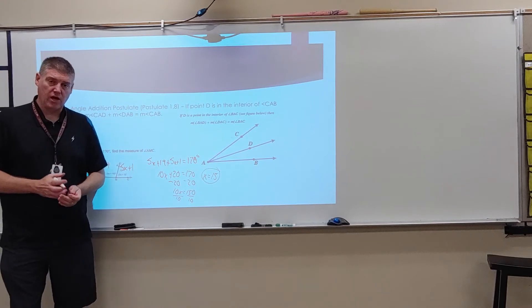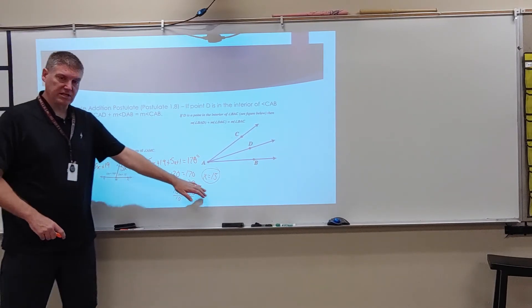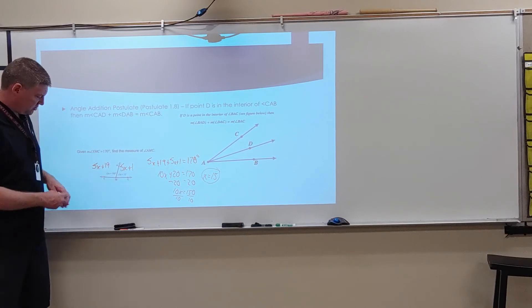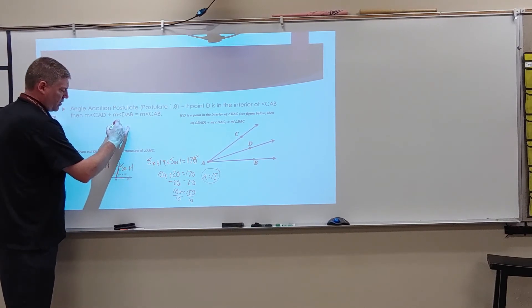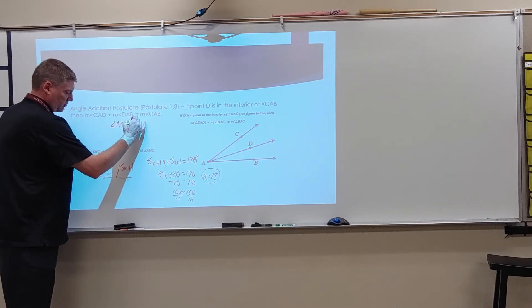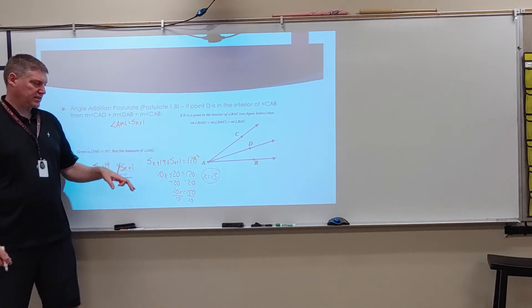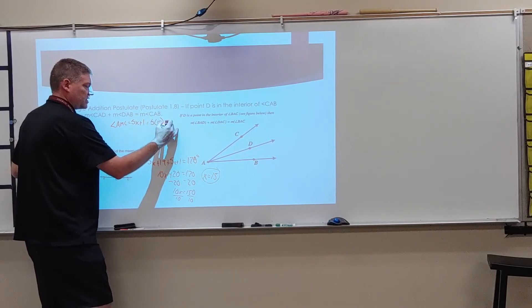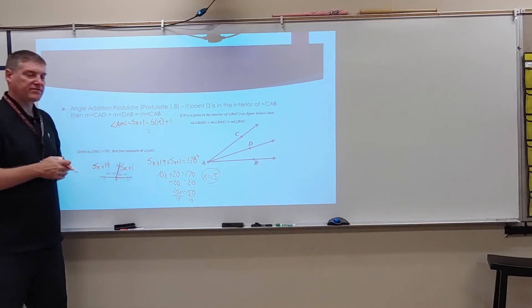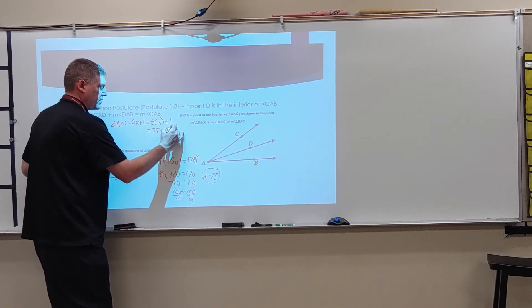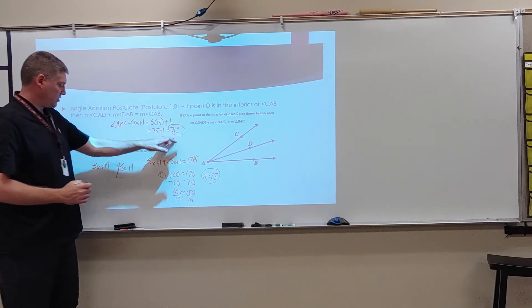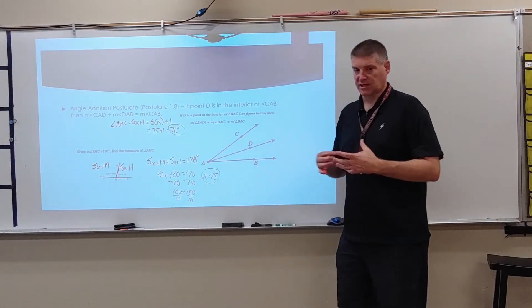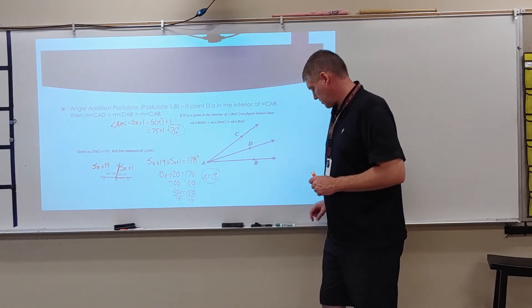Now, that's nice to know, but I'm not done. So this only gives me the value of X. It does not answer the question. The question was find angle AMC. So angle AMC is this one right here. So now angle AMC equals 5X plus 1. I'm going to need to take that value of X and plug it in. So this becomes 5 times 15 plus 1. Well, 5 times 15 is 75 plus 1, 76 degrees. So this angle right here is 76 degrees. So we need to be able to use that angle addition postulate to find that. Because I have the whole angle. I don't have the smaller piece.